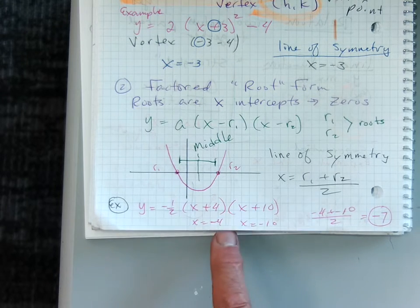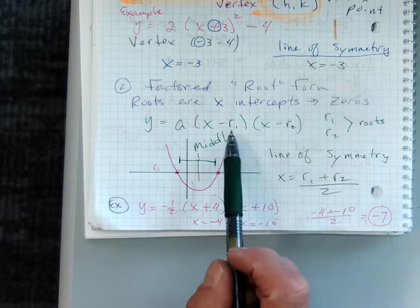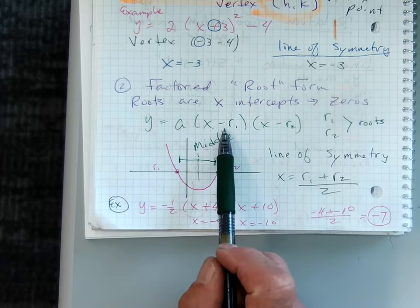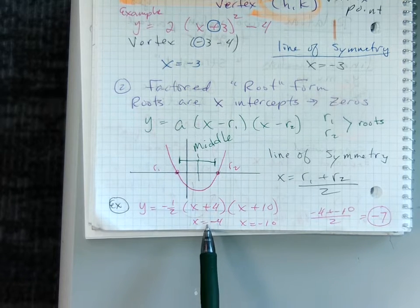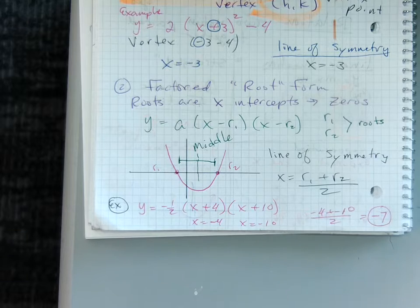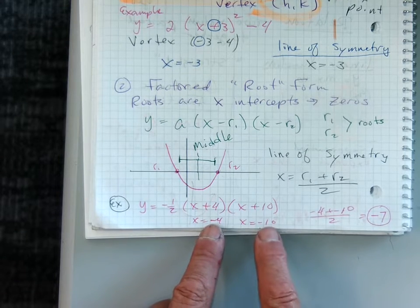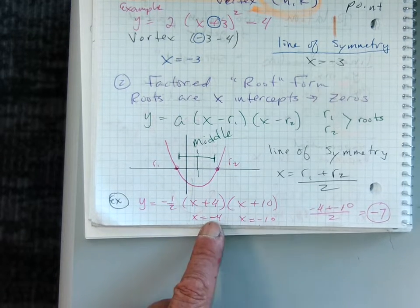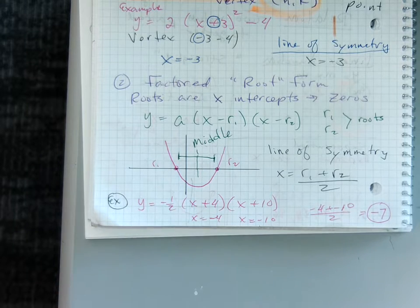Y equals a negative one-half times an x plus four times an x plus ten. So after I solve the mini equations, or we know it's the opposite, opposite of four is negative four, opposite of ten is negative ten, we have our roots. So our roots are at negative four and negative ten.